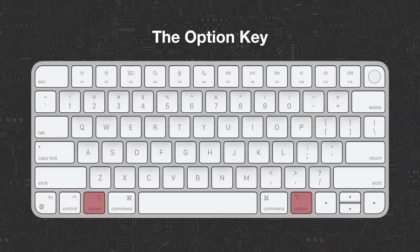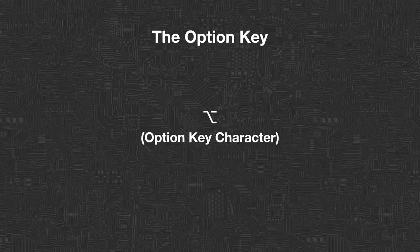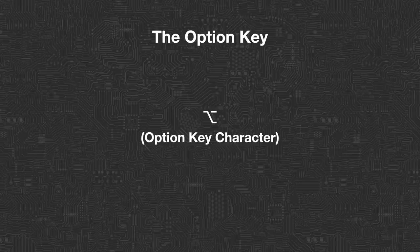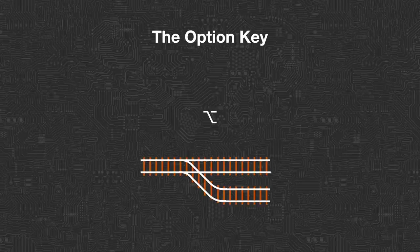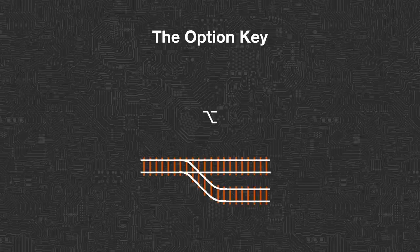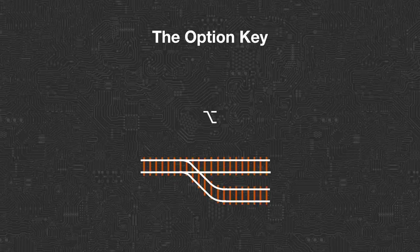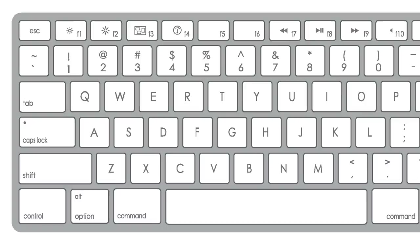Next up we've got the Option key, which also has a special symbol on it — simply called the Option key character. There's no official explanation, but everybody pretty much agrees it looks like a switch, either an electronic switch or perhaps train tracks. When you're typing, if you hold down the Option key it's like shifting to another track where you get different characters. Sometimes people refer to the Option key as the Alt key. On Windows there's an Alt key; on Mac there's an Option key. For years Apple actually put the abbreviation Alt in addition to the word Option on the key, so you can understand the confusion — they do similar things and are in the same spot on the keyboard.